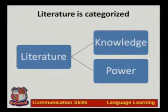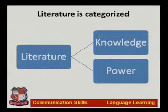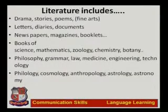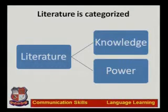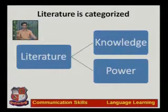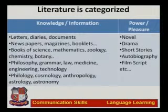Literature is divided into two parts: first, the literature of knowledge, and second, the literature of power. Looking at the slide carefully, from all these types of literature, we need to identify from which kind of literature we can get knowledge and information, and from which kind we can get power. We need to understand what 'power' means here. Literature has been divided into two ways: one from which we get only knowledge, and one from which we can get power.